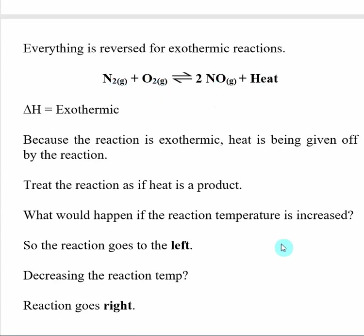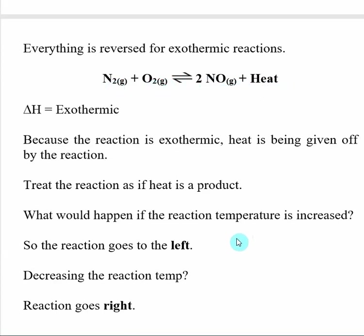The same applies if we increase the reaction temperature — the reaction is going to want to shift in the direction that uses up that heat. So if we go to the left, we use up NO and heat, and then we make O2 and N2. So as we increase the reaction temperature, the reaction shifts in the direction that uses up heat, and that's to the left.